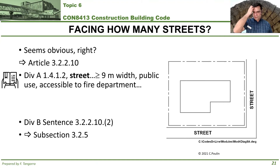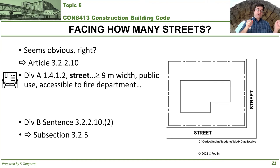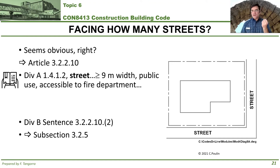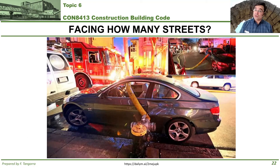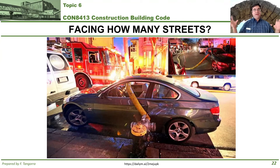I also recommend you check out sentence 3.2.2.10.2, which points to subsection 3.2.5 related to another way to identify a street. Going back to the fire department aspect: why it's important to identify how many streets a building is facing is because if something goes poorly — say a fire — you want to make sure that the fire department has access to fire-saving equipment, utilities, and can get close enough to your building.